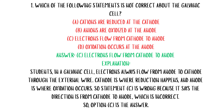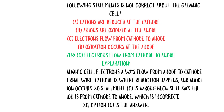MCQ 1: Which of the following statements is not correct about the galvanic cell? A. Cations are reduced at the cathode. B. Anions are oxidized at the anode. C. Electrons flow from cathode to anode. D. Oxidation occurs at the anode. Answer: C. Electrons flow from cathode to anode. Explanation: In a galvanic cell, electrons always flow from anode to cathode through the external wire. Cathode is where reduction happens, and anode is where oxidation occurs. So statement C is wrong because it says the direction is from cathode to anode, which is incorrect. Option C is the answer.